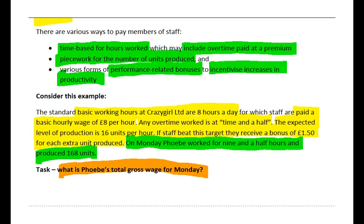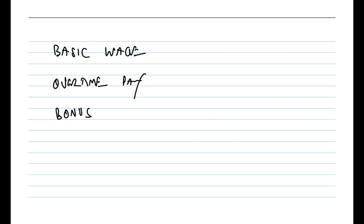Why don't you pause for a few minutes, have a go at this example, and see if you can work through the solution? Once you've come up with some numbers, restart and we'll compare. As we said, we need to combine three elements to Phoebe's wage: the basic wage earned, then any overtime pay, and then any bonus earned.